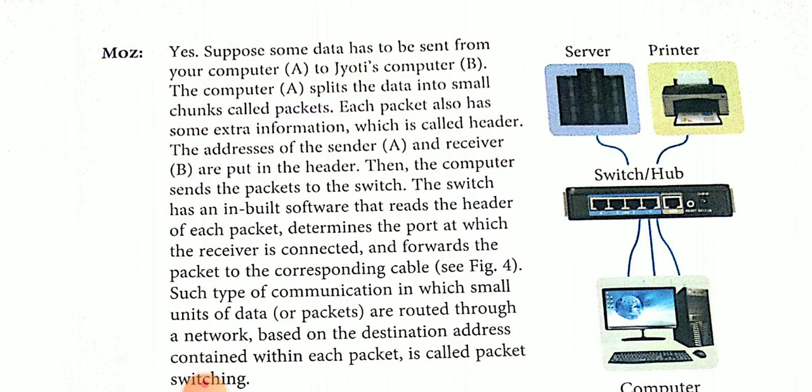Look at this figure. The switch has inbuilt software that reads the header of each packet, determines the port at which the receiver is connected, and forwards the packets to the corresponding cable. Such type of communication in which small units of data are routed through a network based on the destination address contained within each packet is called packet switching.